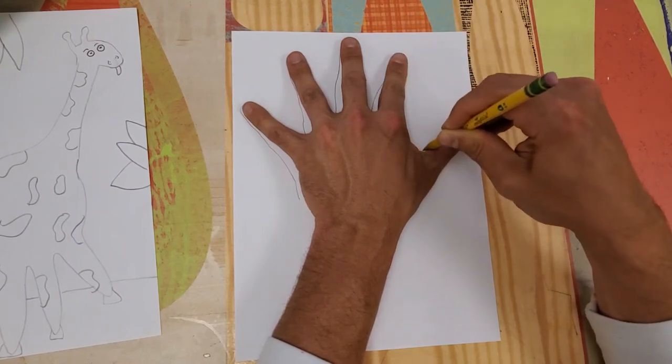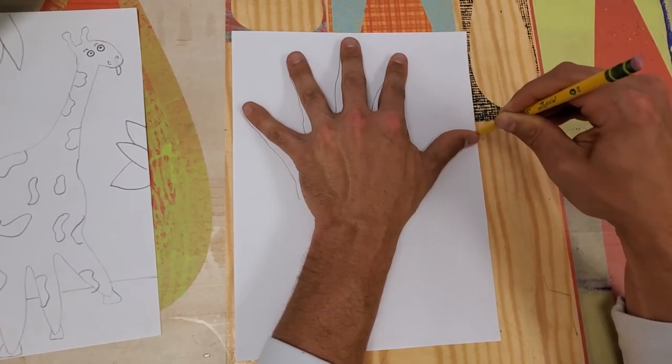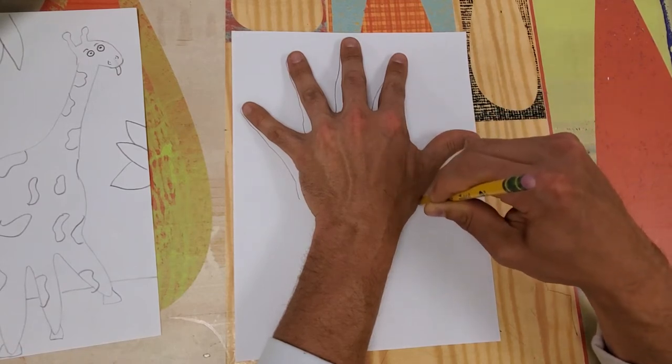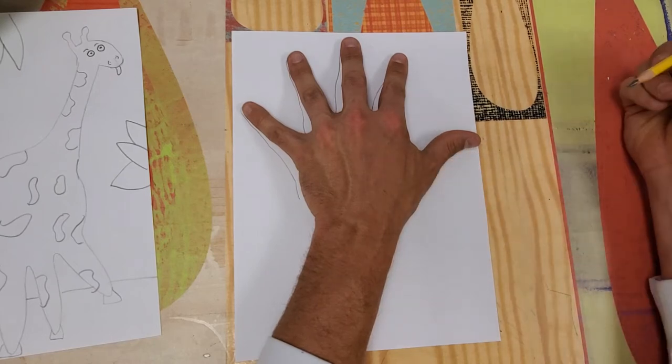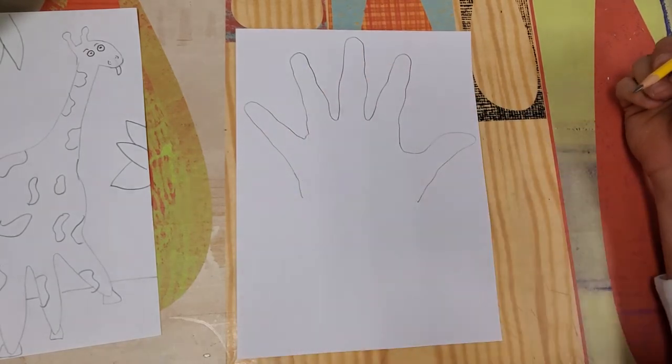And when you come out here for the thumb, just make sure that stays on the paper. I'm not going to go down to my wrist. Do you notice this? I'm going to stop here.